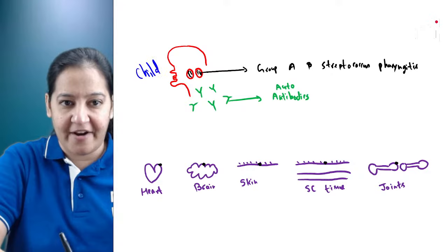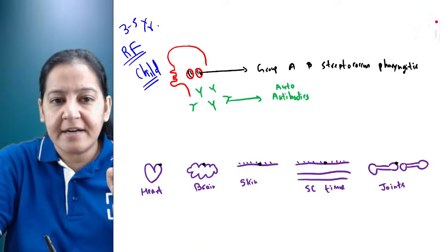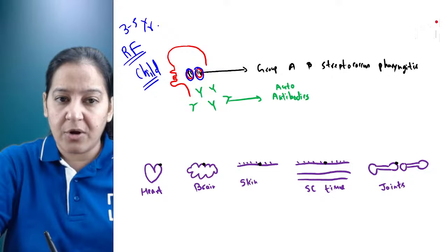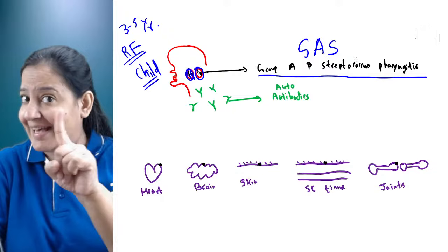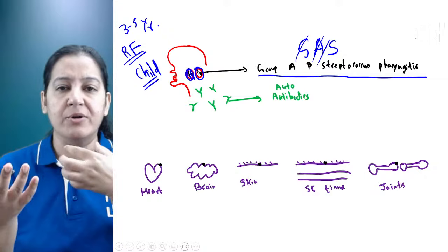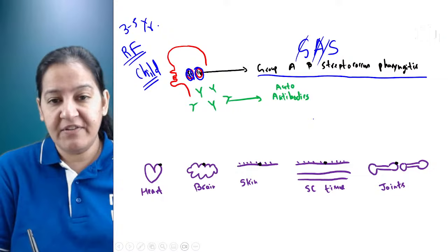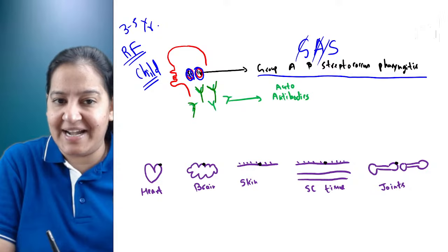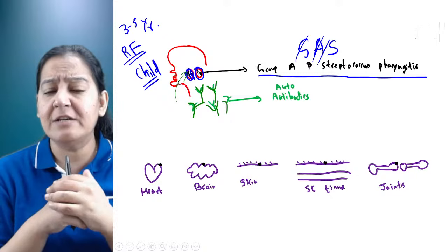Let me tell you a beautiful story. Rheumatic fever is a disease of children, not adults — child age 3 to 5 years. This child has tonsils, and inside the tonsils the child gets an infection — tonsillitis or pharyngitis — caused by a bacterium called GAS: Group A beta Streptococcus. This is the infection that triggers everything.